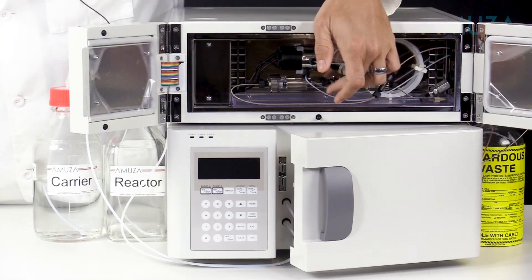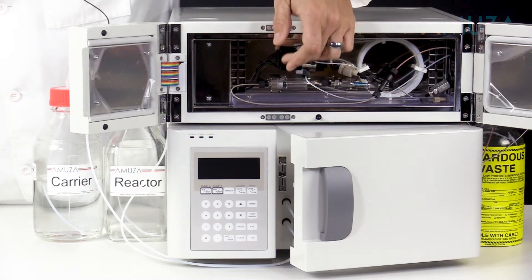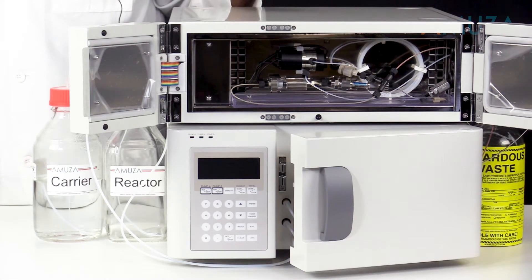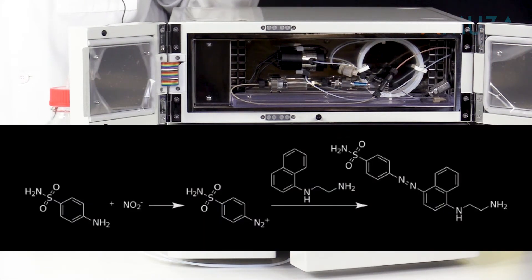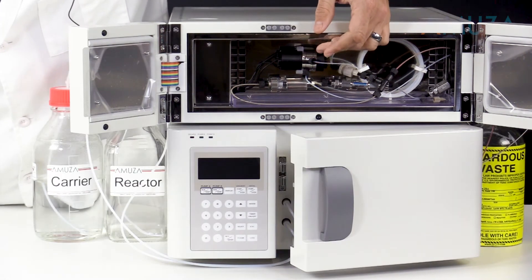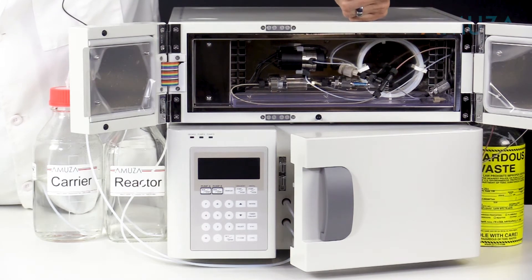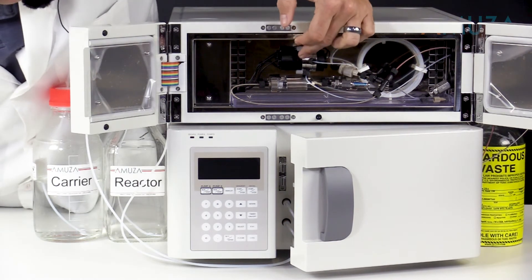After separation, nitrate is reduced to nitrite. The system utilizes the Griess reaction in which nitrite forms an azo dye and is detected as the pink color develops and is measured by absorbance detection at 540 nanometer wavelengths.